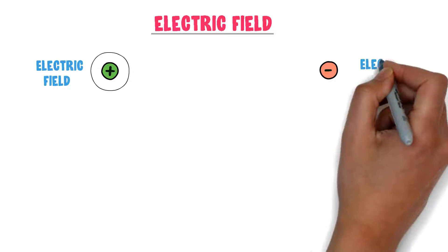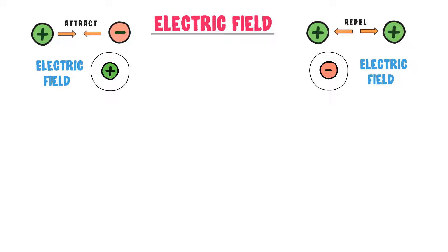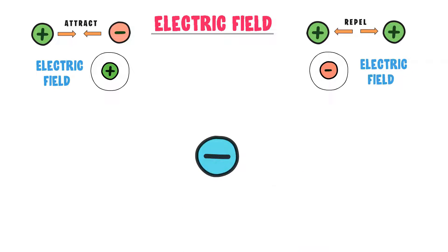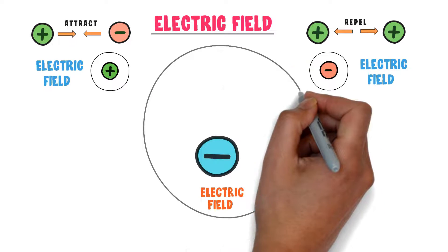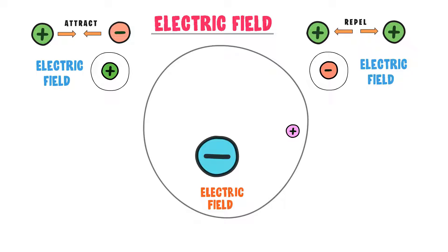Now let me teach you about the electric field. Consider two charges — positive and negative. According to Michael Faraday, there is an electric field around a positive charge and also around a negative charge. We know that like charges repel and unlike charges attract. Let's consider a big negative charge — there is an electric field around this negative charge. If I bring a small positive point charge into this electric field, what will happen?